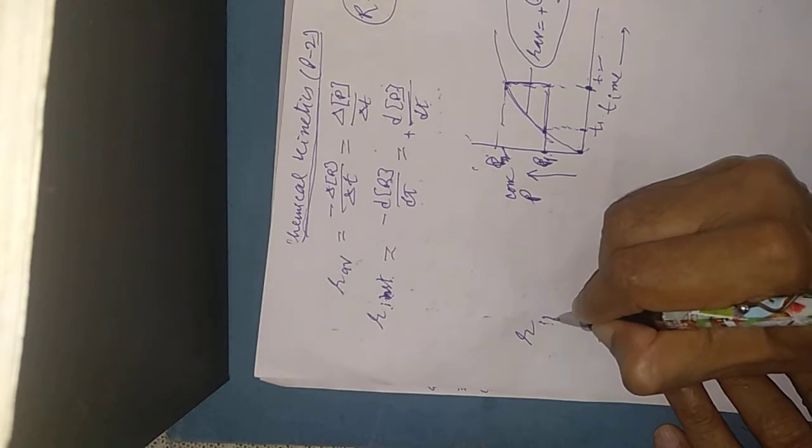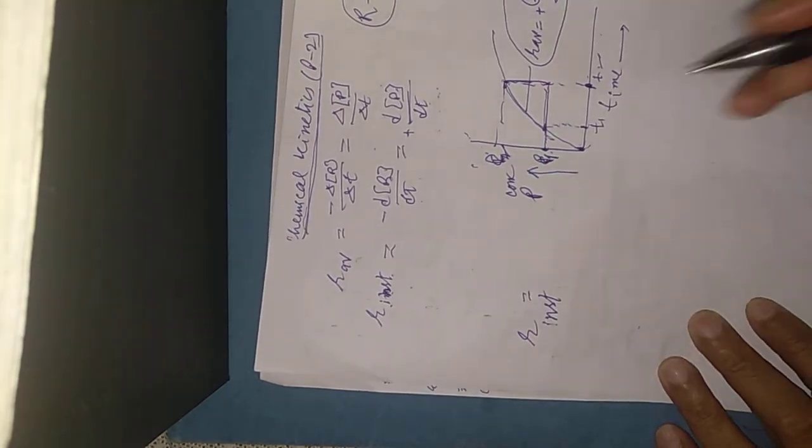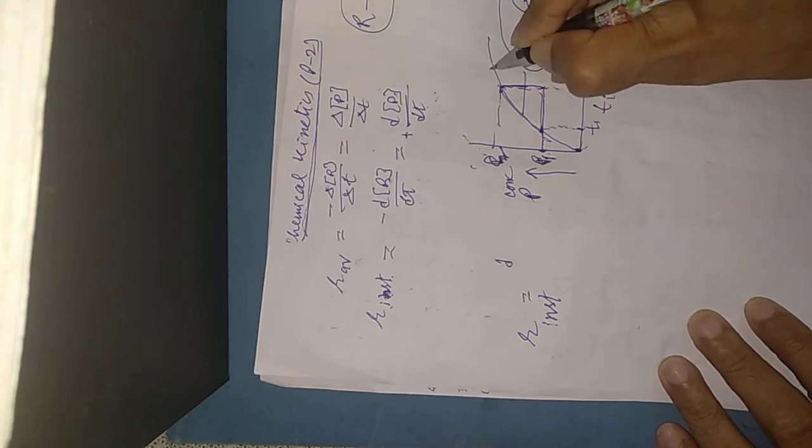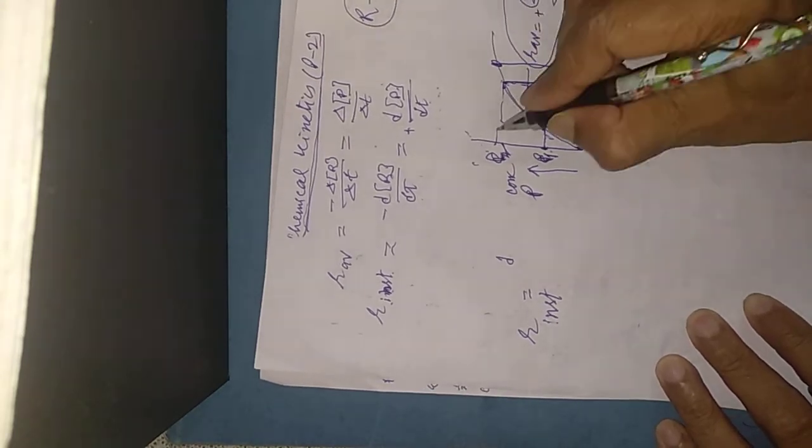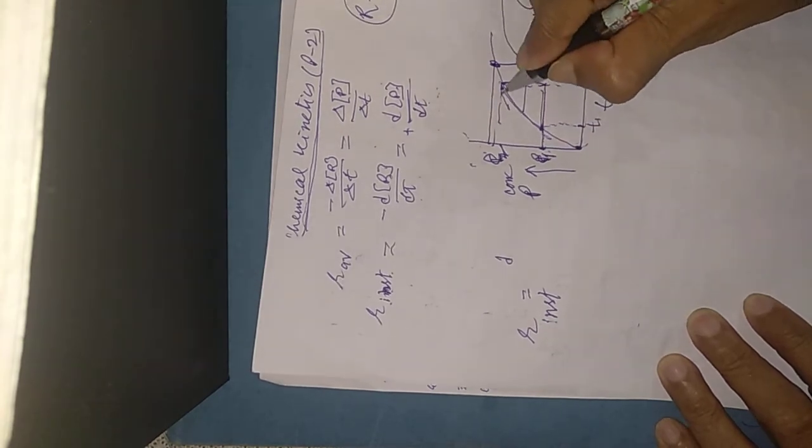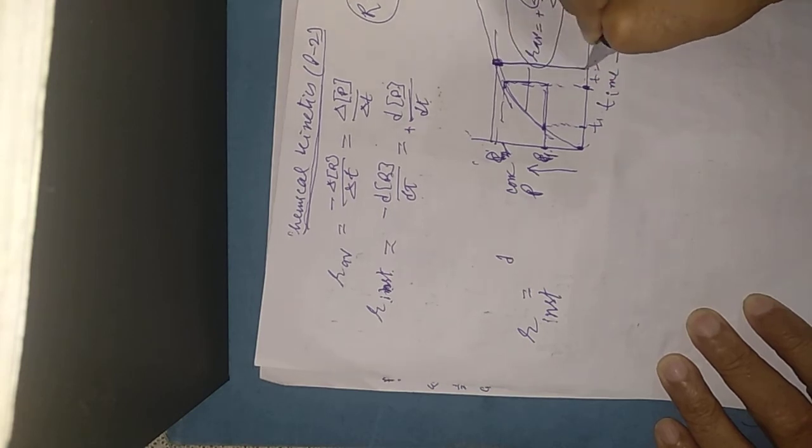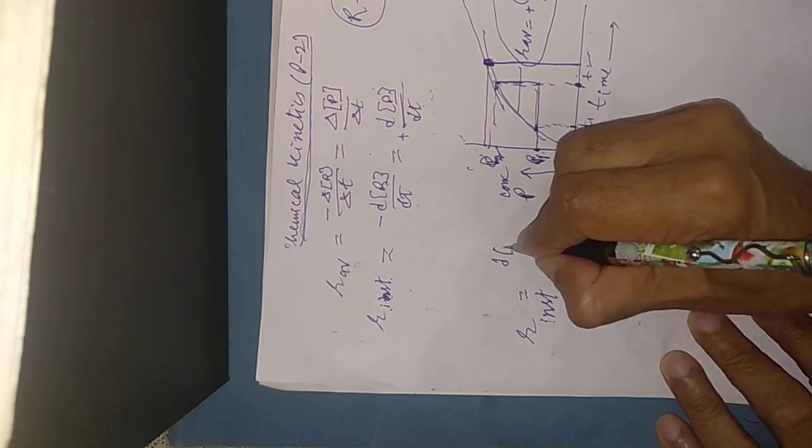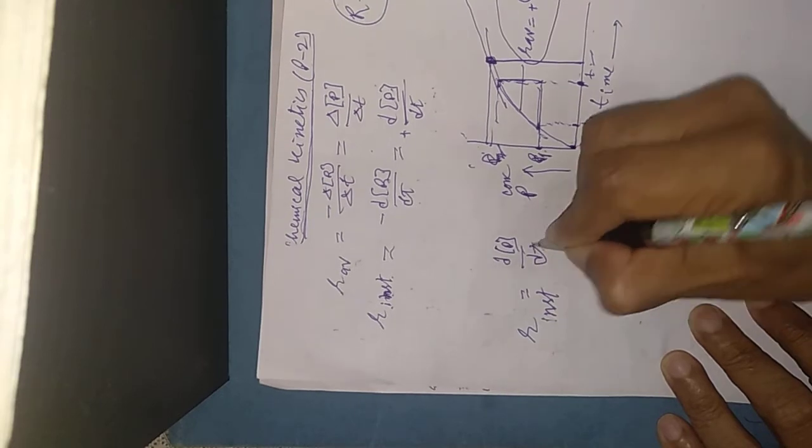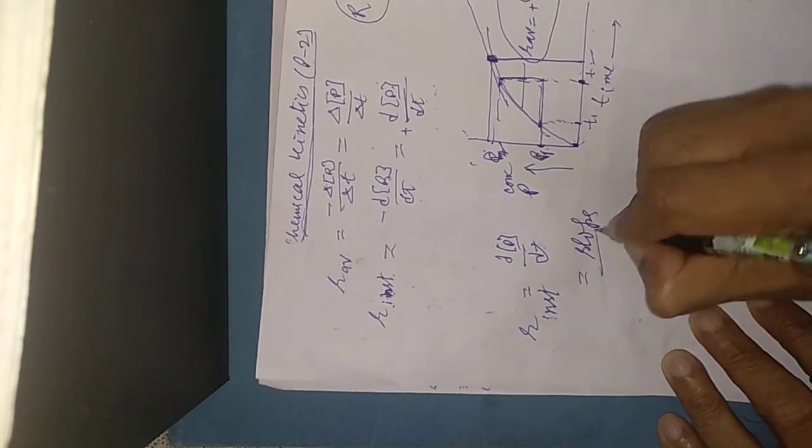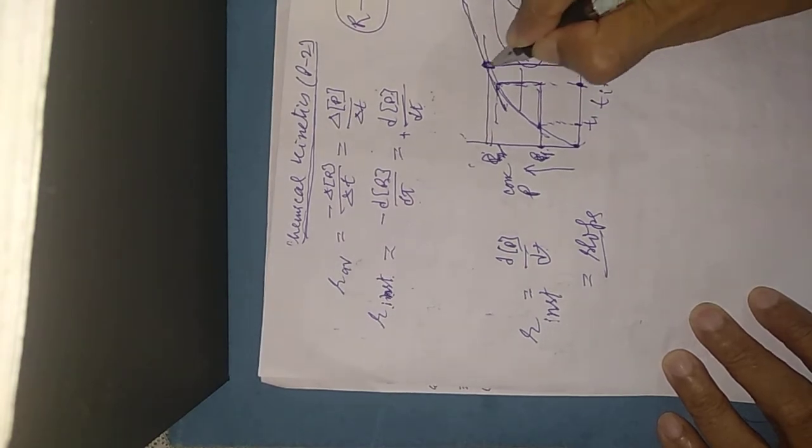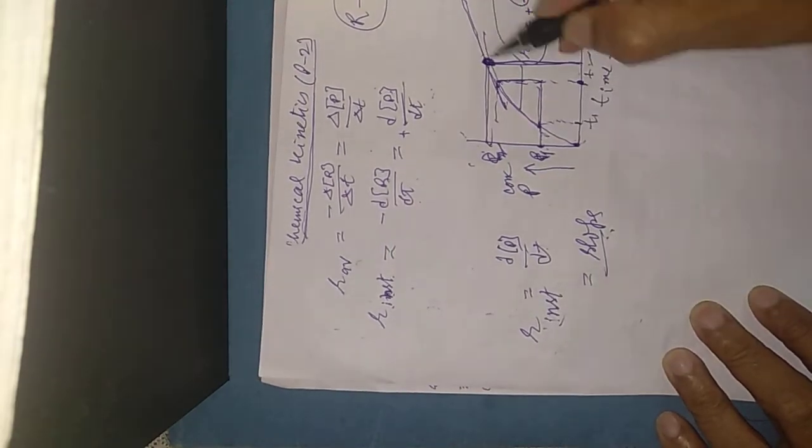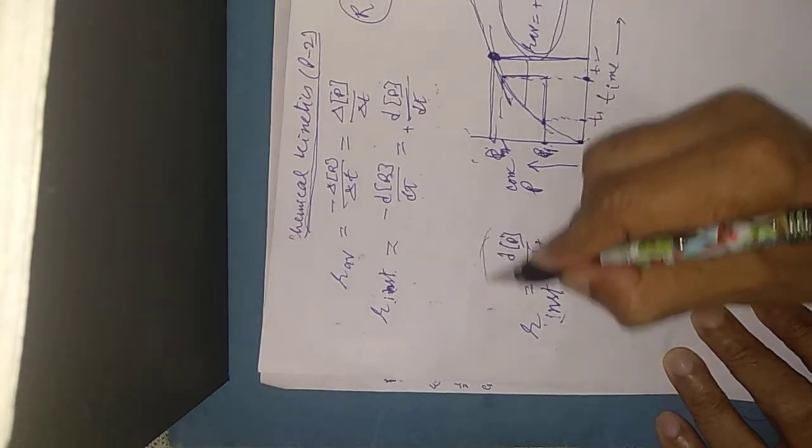How is instantaneous? The instantaneous is at a particular time. At this particular time, we draw a tangent at that point. The instantaneous rate is DP upon DT. This is also written as the slope, because you have to draw a tangent where you can find the slope, and you can find R instantaneous rate from the slope. One is R average and one is R instantaneous.